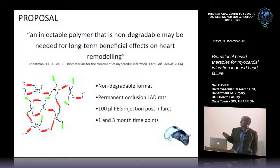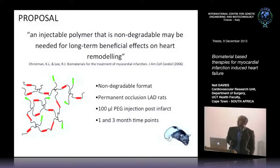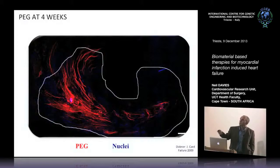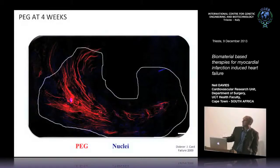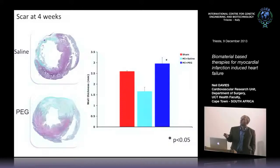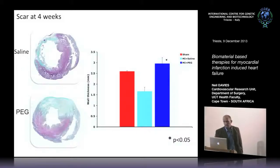We established a left anterior descending full permanent occlusion rat model and injected PEG gels, looking at one and three months after injection. We can attach fluorescent labels onto the gel. You can see the gel was injected into the infarcted area in streaks, bridging the infarct. After four weeks the gel was clearly visible and nicely distributed, and we had preserved scar thickness — the PEG group showed preservation of wall thickness compared to the saline injection control.